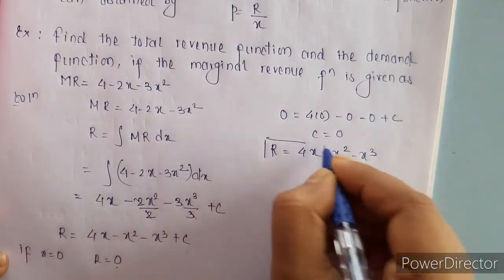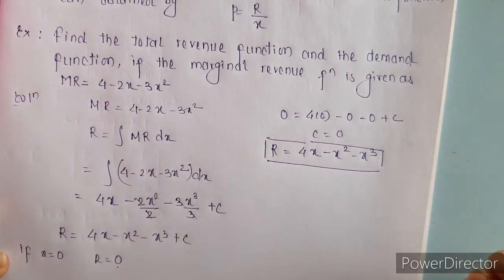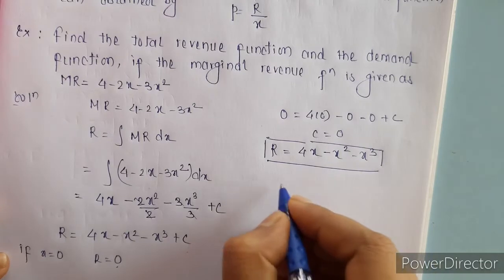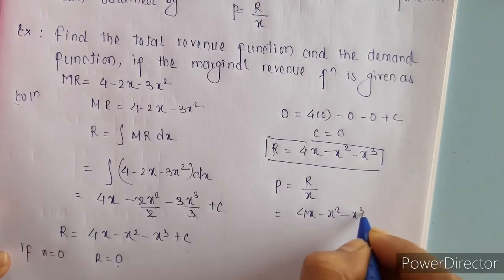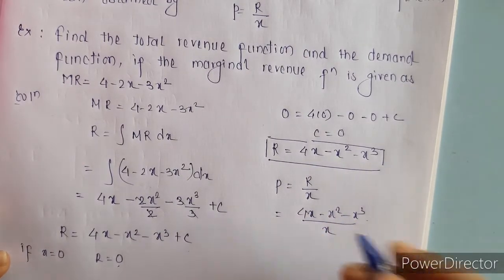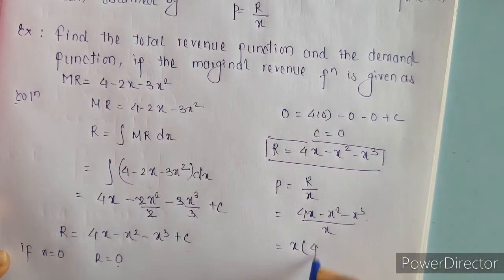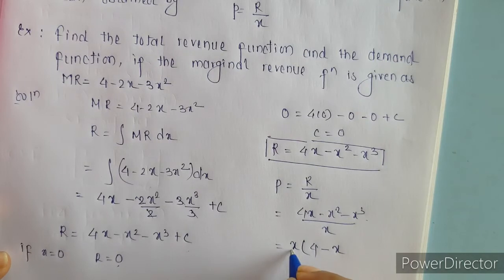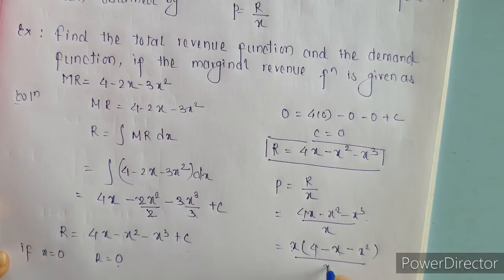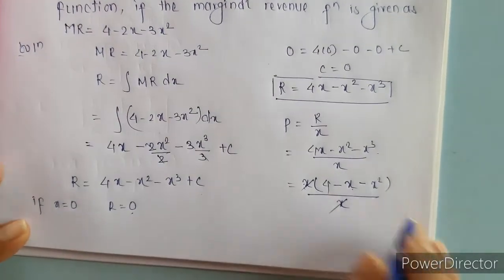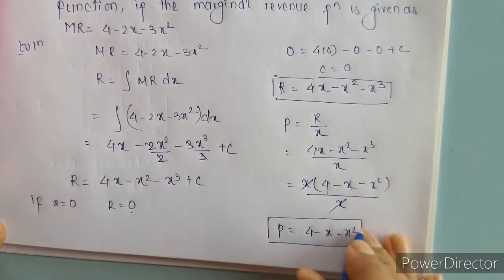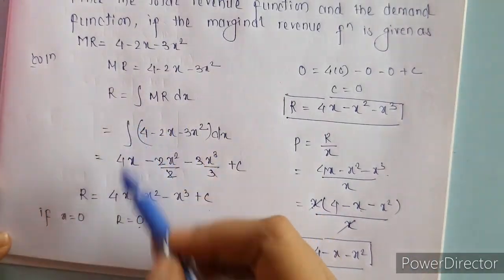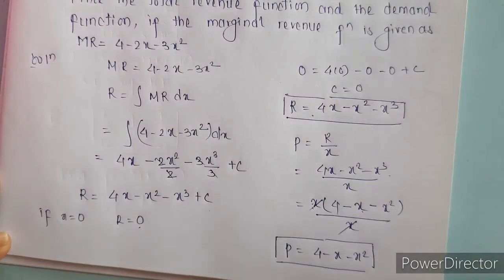We got our revenue function. Now using this total revenue we have to find the demand function. The demand function is revenue divided by X. So we have 4X minus X squared minus X cubed divided by X. Taking X common from the numerator gives X times (4 minus X minus X squared), and dividing by X cancels it. So the demand function is 4 minus X minus X squared. Given marginal revenue, we can find the revenue function and using that, the demand function.